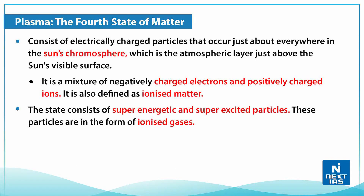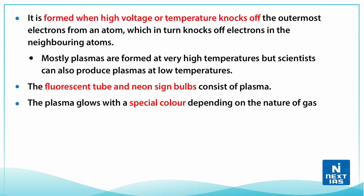Plasma is considered the fourth state of matter. It consists of electrically charged particles that occur just about everywhere in the sun's chromosphere, which is the atmospheric layer just above the sun's visible surface. It is a mixture of negatively charged electrons and positively charged ions, and is also defined as ionized matter. The state consists of super energetic and super excited particles in the form of ionized gases.